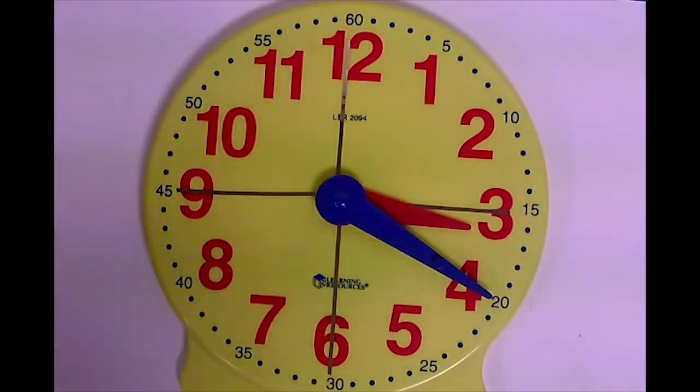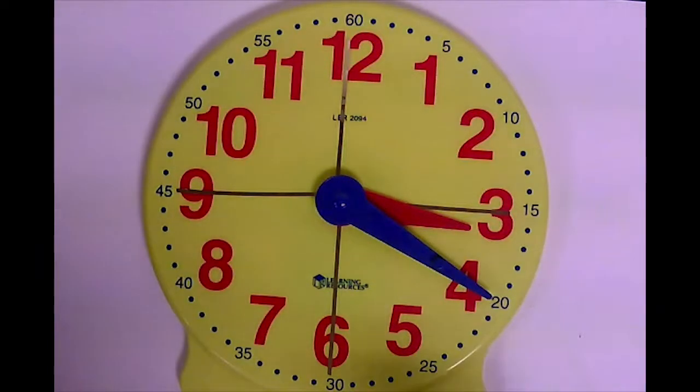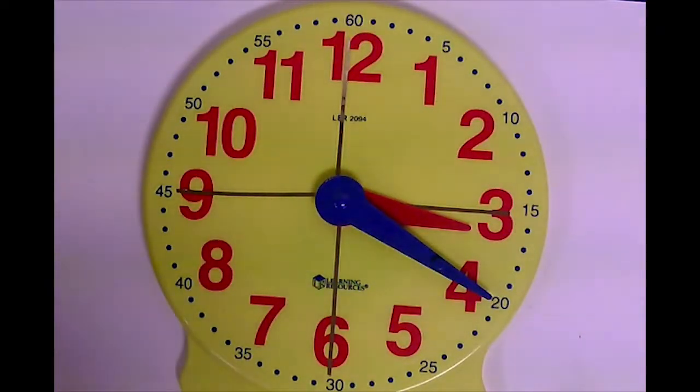So when you're dealing with elapsed time, try to figure out if you need to go clockwise or counterclockwise, and then count by hours, and then count by minutes. Usually by fives, unless it tells you something otherwise. If you remember those rules, this is really easy.